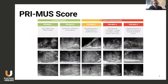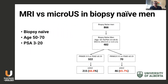Based on this rationale, a scoring system called the Primus scoring system has been developed — it's currently in its first version. It is similar to the PIRADS scoring system in that it is a Likert score from one to five, with one and two being considered negative and three, four, and five being considered positive. Scores of one and two show that ductal Swiss cheese pattern, while three, four, and five represent different permutations of loss of those ductal features.